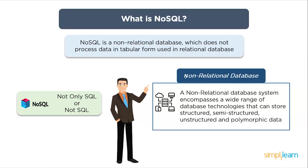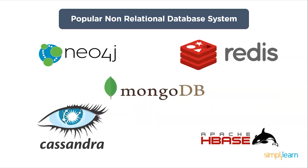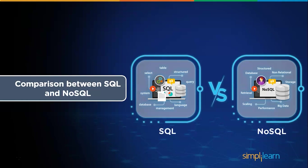Carl Strauss introduced the NoSQL concept in 1998. Traditional RDBMS uses SQL syntax to store and retrieve data. Instead, a NoSQL database system encompasses a wide range of database technologies that can store structured, semi-structured, unstructured, and polymorphic data. Non-relational databases are often used when large quantities of complex and diverse data need to be organized. For example, a large store might have a database where each customer has their own document containing all information — from name and address to order history and credit card information. Some popular non-relational database systems are Neo4j, MongoDB, Cassandra, and Apache HBase.